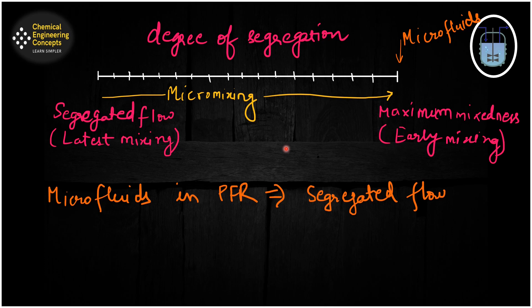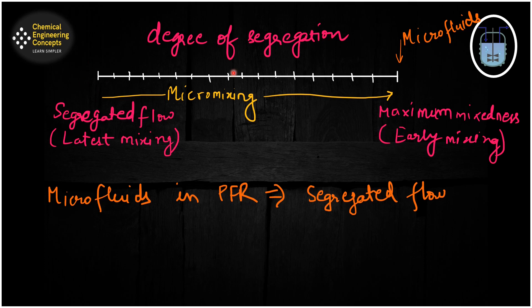Here you can see the scales of the degree of segregation for micro mixing. On one side we have segregated flow, which corresponds to the latest mixing, and on the other extreme we have the maximum mixedness model, which is the earliest mixing. The micro fluid lies on this side. For real reactors, we cannot be at either extreme — we will be at intermediate values of micro mixing.